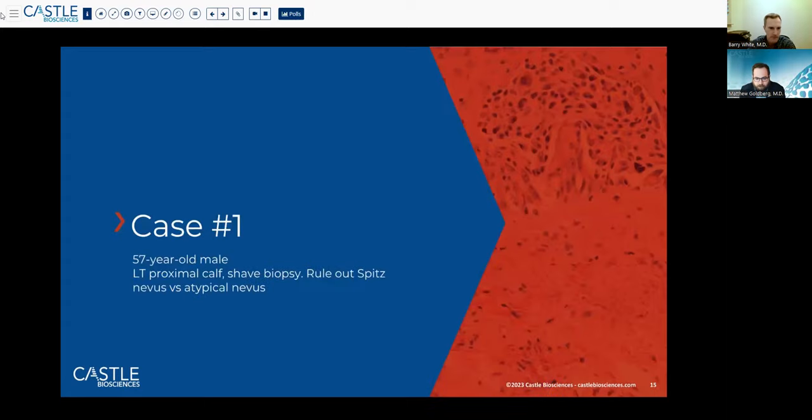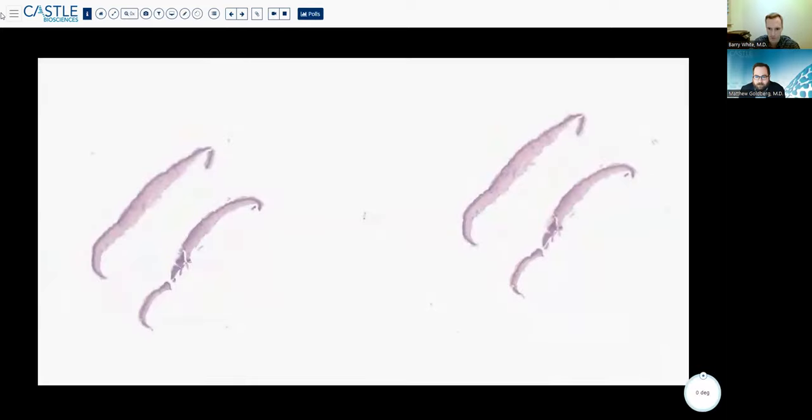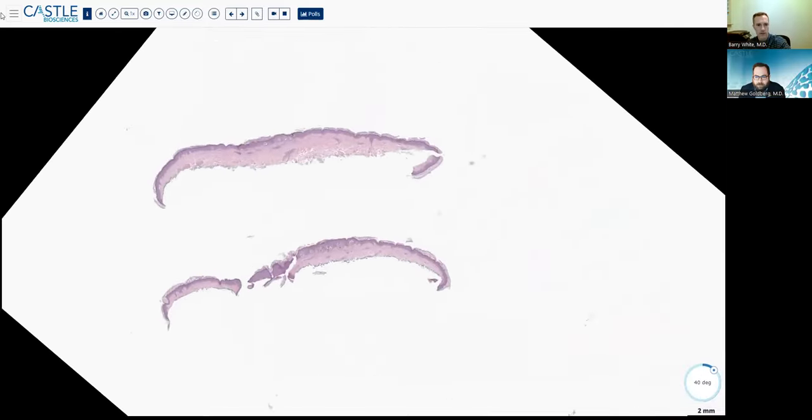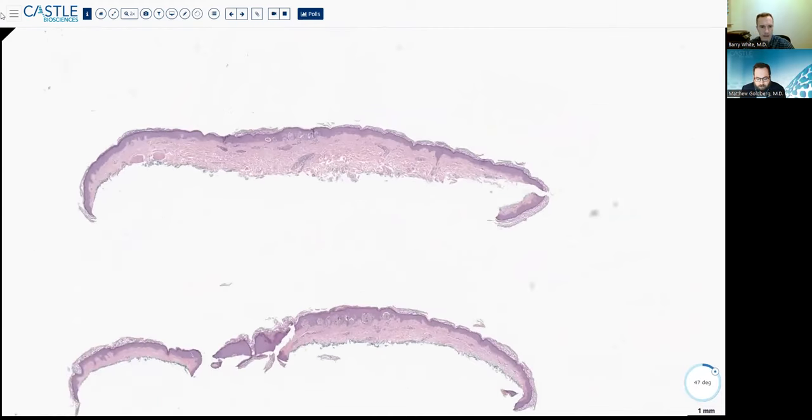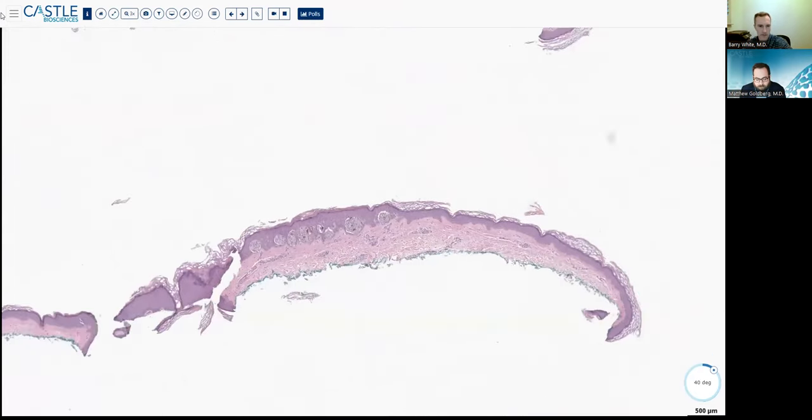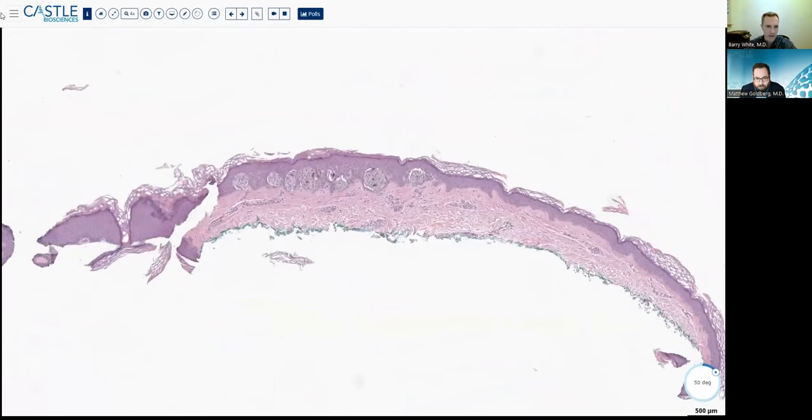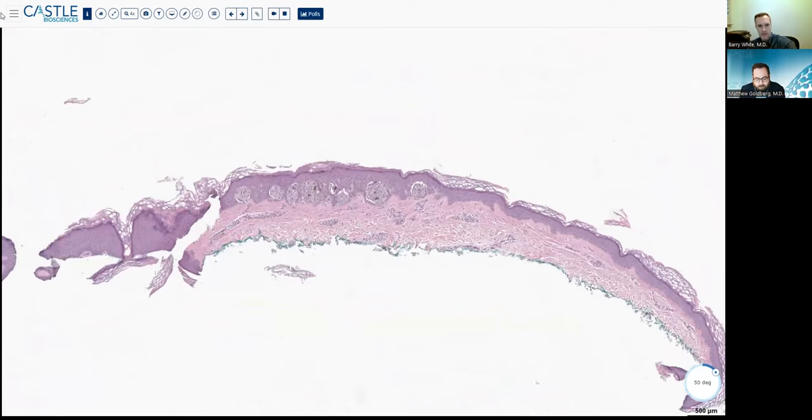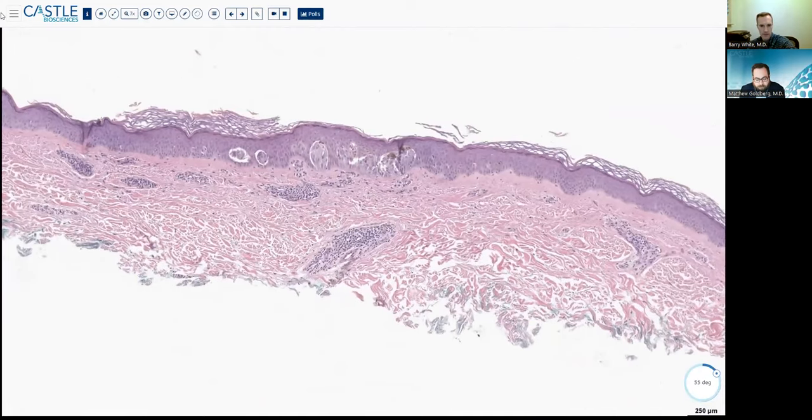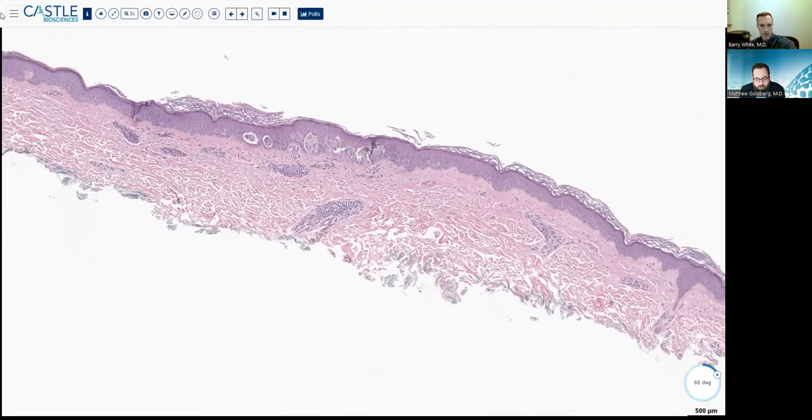The first case is a 57-year-old male, and the biopsy was taken from the left proximal calf with the rule-out atypical nevus versus spitz, which is kind of unusual for a rule-out in that age group. What we have here is just a shave biopsy. You can see it's kind of a small lesion of rather epithelioid melanocytes, someone say spitzoid, with some dusty pigment in them, large nests. It's fairly circumscribed, mostly ends in a nest, but there's some trailing off. There is some pagetoid spread of melanocytes.